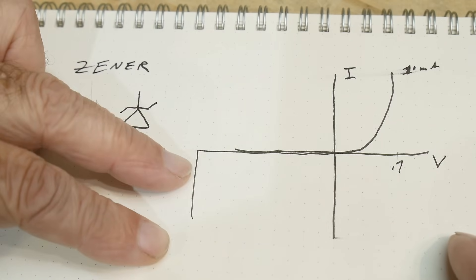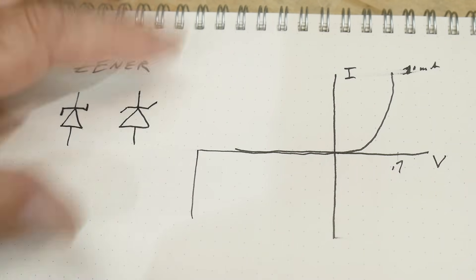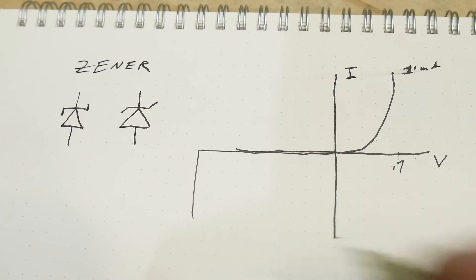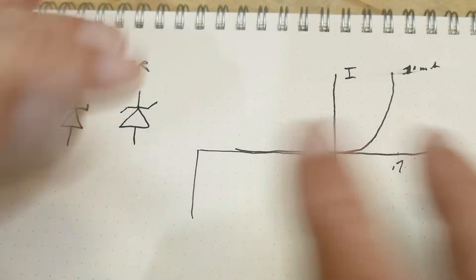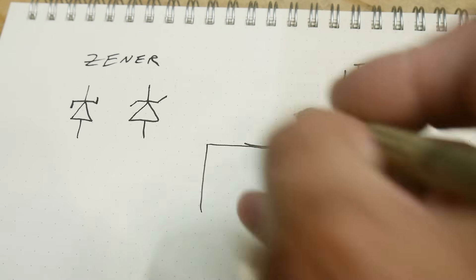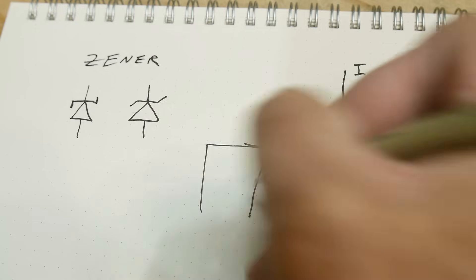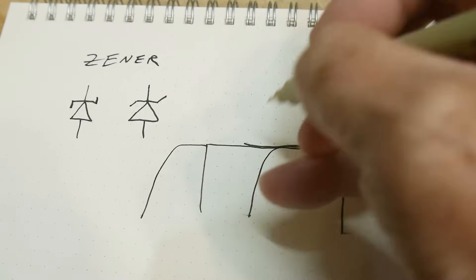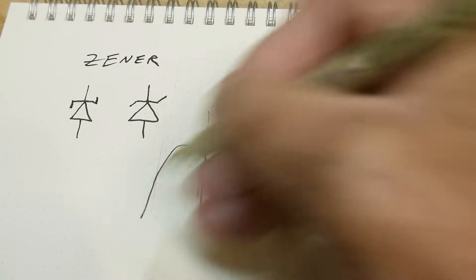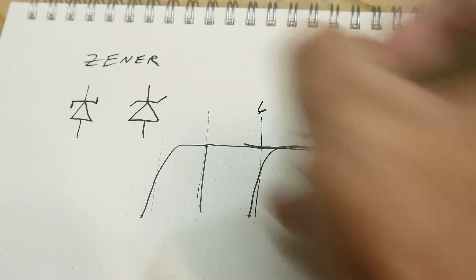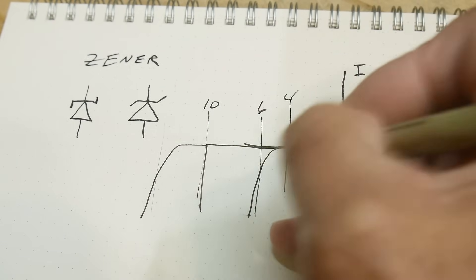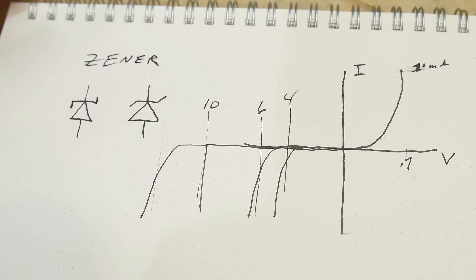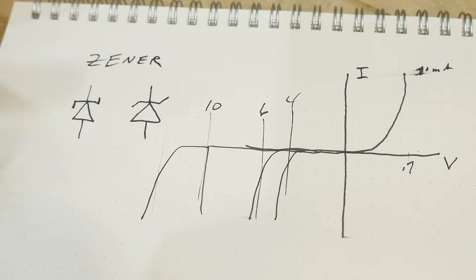Zener diodes have a controlled breakdown. By putting in different amounts of material at the diode junction, you can get it to break down earlier or later, and you can set that voltage. If you want a 6-volt, 10-volt, or 4-volt Zener, you make the PN junction with different materials and densities so it breaks down at different places.